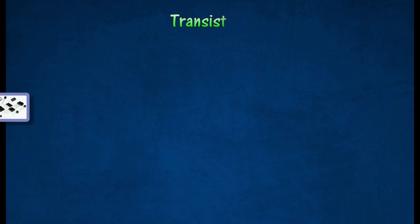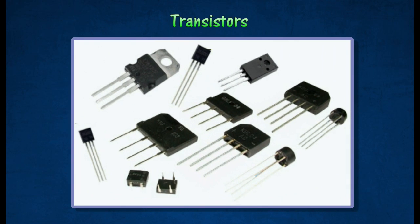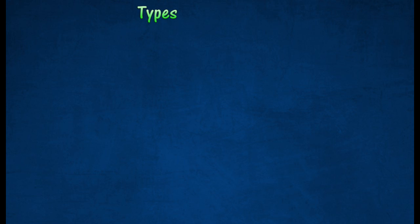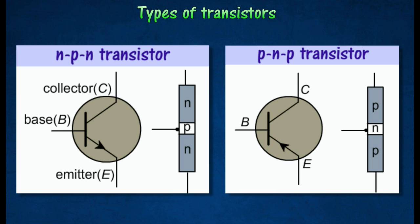Transistors. A transistor is a useful electronic component made from three layers of P-type and N-type semiconductors. There are two types of transistors, namely NPN transistor and PNP transistor.